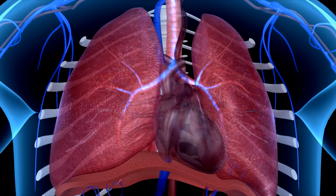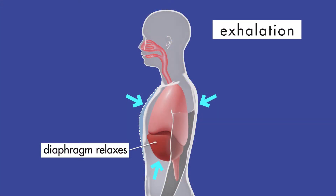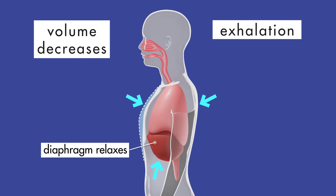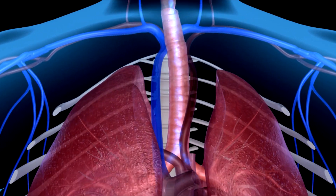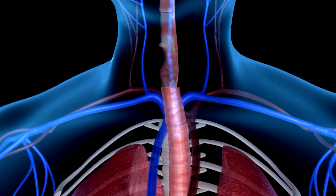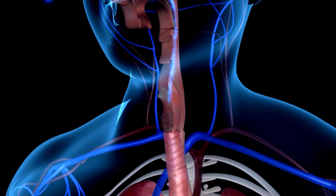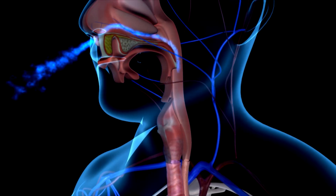When the air pressure inside the lungs is the same as the air pressure outside the lungs, inhalation stops and exhalation begins. When the diaphragm relaxes, it decreases the volume of the thoracic cavity, which decreases the volume of air inside the lungs. This decrease in volume creates a region of higher air pressure inside the lungs. Because air moves from a region of higher air pressure to a region of lower air pressure, air rushes out of the lungs. This is exhalation.